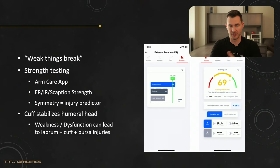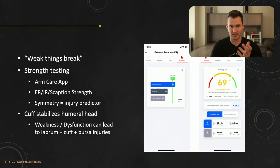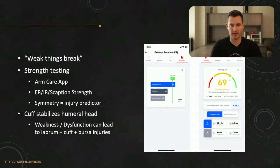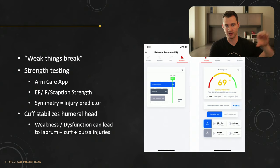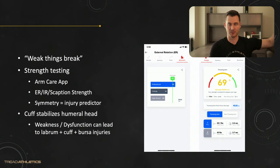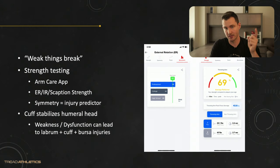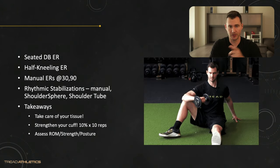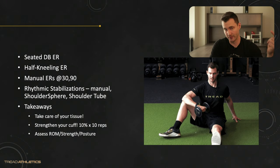Here's a screenshot from the ArmCare app — it breaks down all the metrics. The test takes three minutes and you can do it daily or weekly. Coaches can have their athletes do it and monitor fatigue levels over the course of a season. They've built out dashboards — it's a pretty cool system.